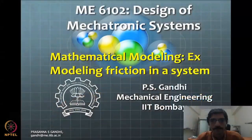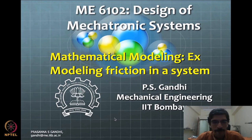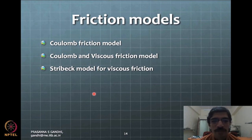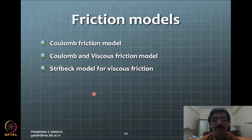Let me switch to slides mode. The model you have been familiar with, probably from JEE mechanics and other courses, is friction equals mu times N. Now, can you represent that in mathematical form? Think about it - write down the equation of the friction model.